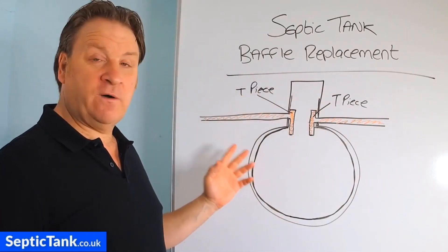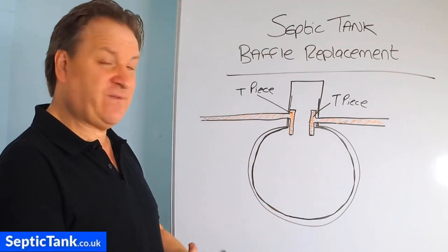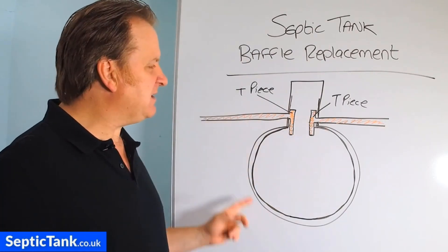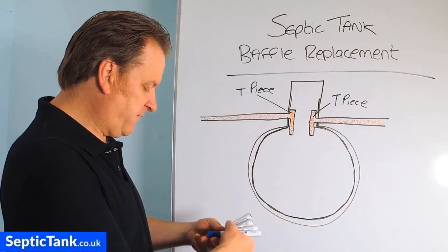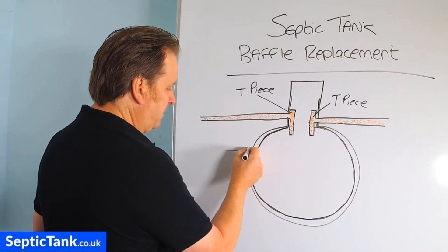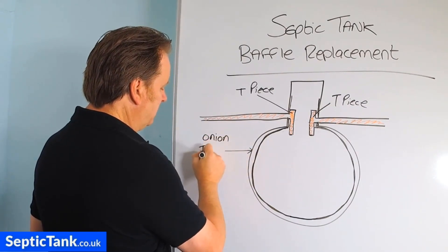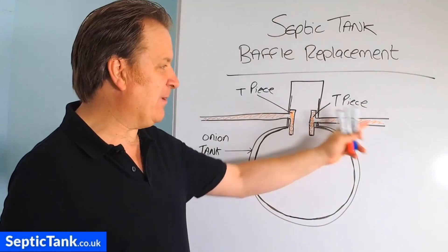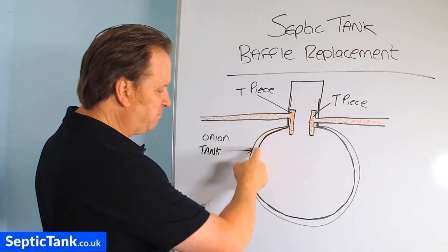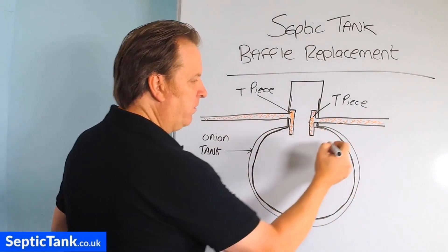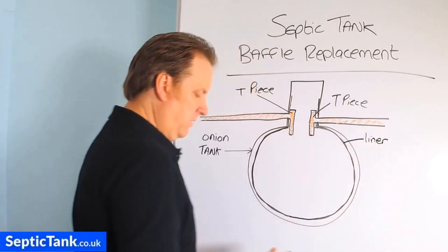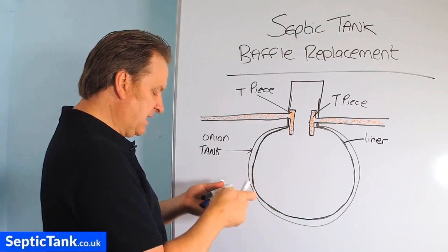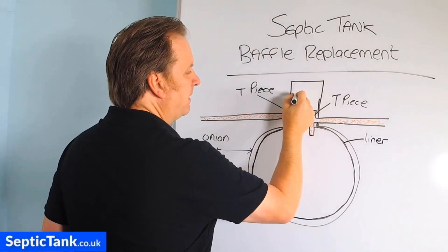So this is a diagram of an onion-shaped septic tank. If I explain how it works and why you need a baffle, you'll hopefully have a better understanding of what a baffle is. So inside an onion tank — this is the outside shell of the onion tank — you've got an inlet pipe, an outlet pipe, and some tee pieces. And inside you've got this black line that I've drawn, which is called a liner — it's like a black rubber liner inside the tank, held into place inside the neck of the tank by hooks.